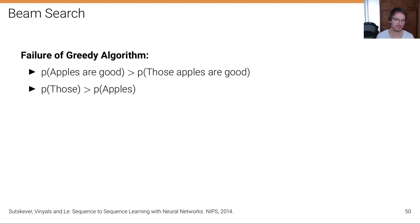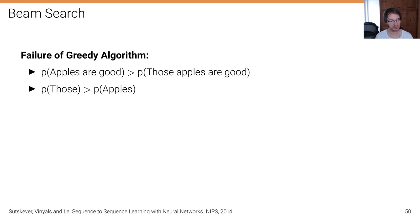Here's a failure case of the greedy algorithm. Consider the sentences 'apples are good' and 'those apples are good.' The probability of 'apples are good' in a training corpus might be larger than 'those apples are good' because it occurs more frequently. However, there are more sentences starting with 'those' compared to 'apples,' so the probability of the partial sentence 'those' is bigger. If we do greedy decoding, we would start with 'those' even though 'apples are good' has higher overall probability.